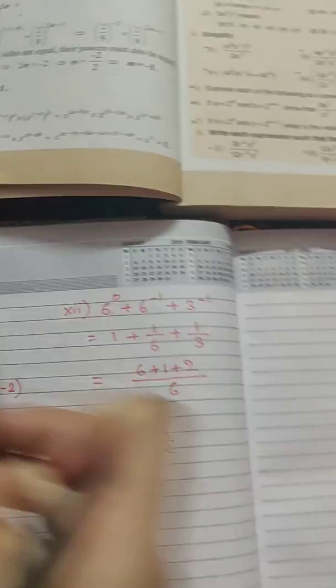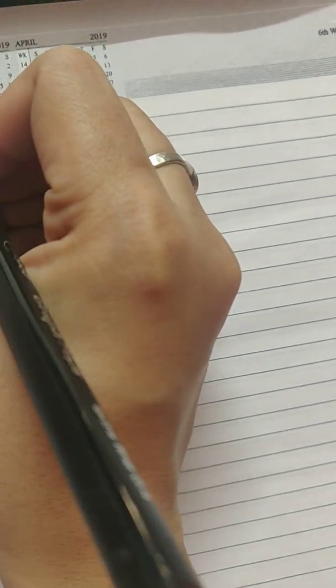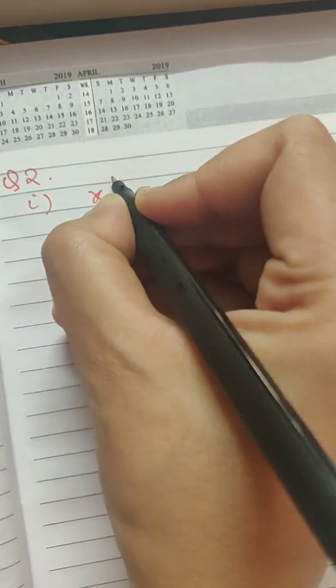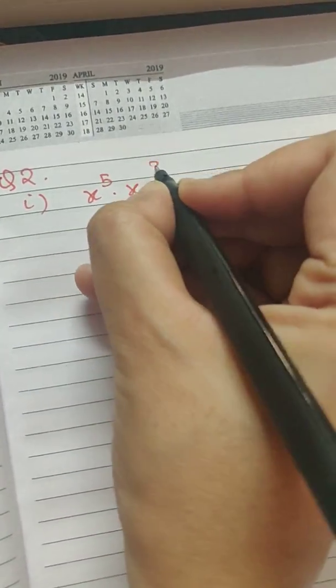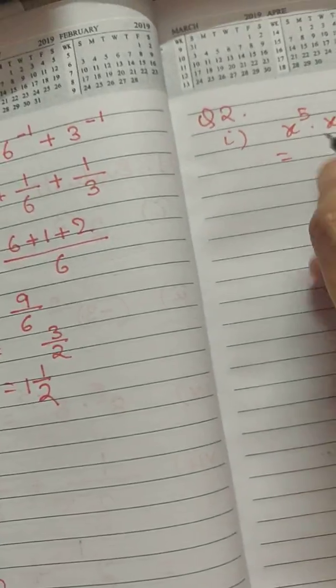Next comes question number 2, which is simplify, where we have to simplify the given sums. The first one is x to the power 5 into x to the power 3. Here we are going to apply the laws that we have learned.